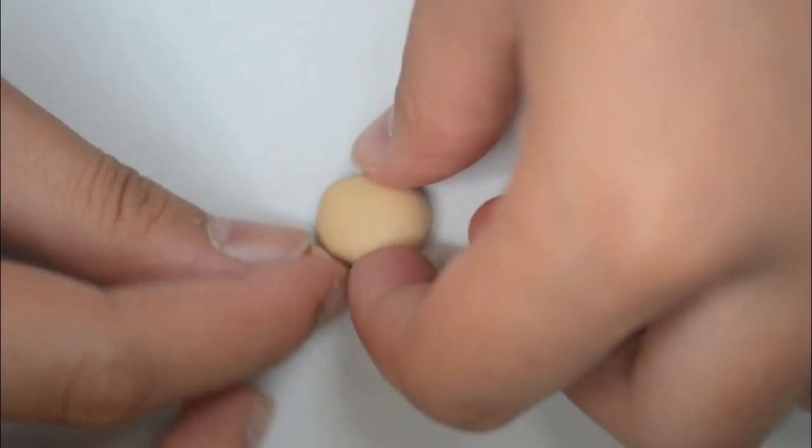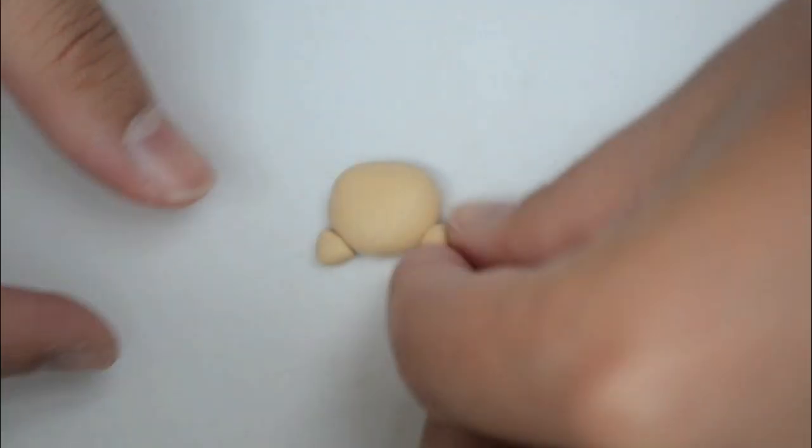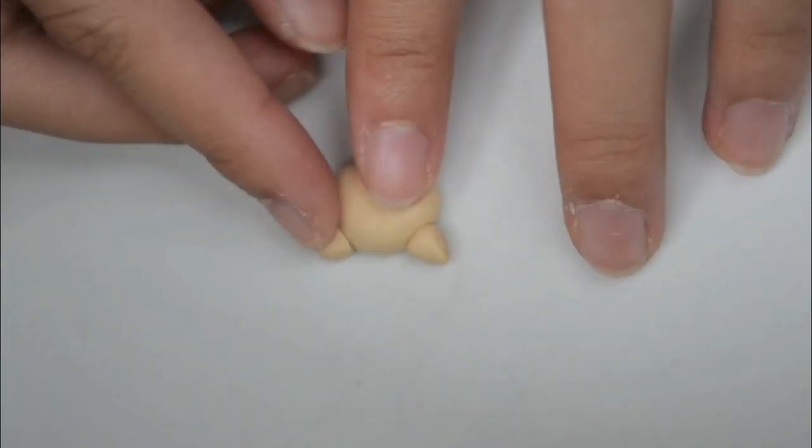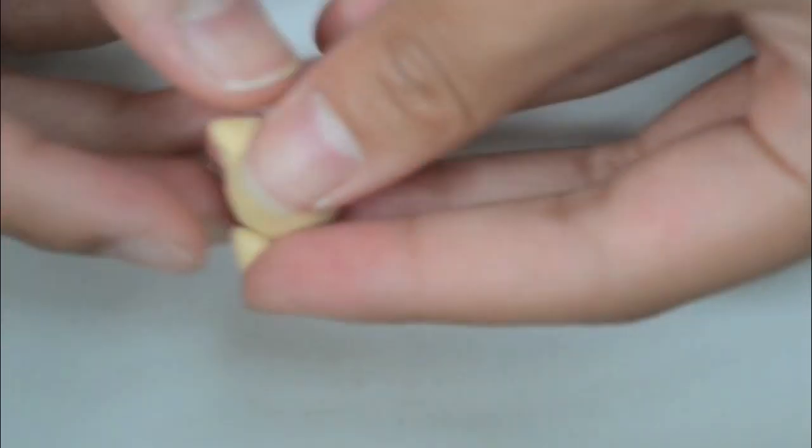After you shape the bun, you want to add the ears and they're just triangles, and then you can smooth it on and fix it later. You're going to end up with something like this. Excuse the dirt on my clay.